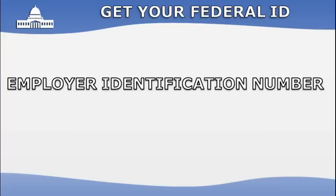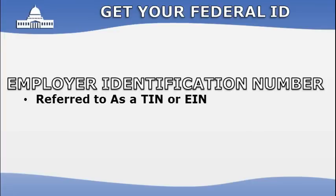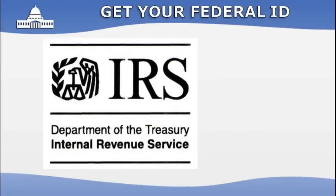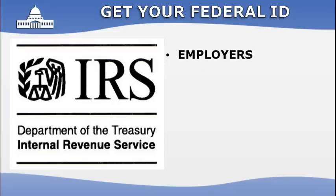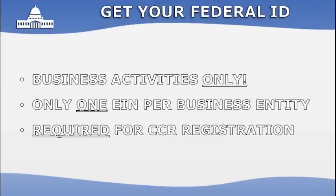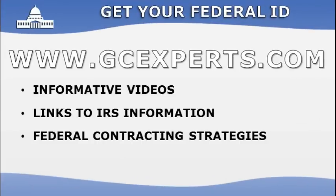To do business with the federal government, you must register in their system via an Employer Identification Number (EIN), also called a taxpayer identification number. This nine-digit number assigned by the IRS identifies tax accounts of employers and is used by sole proprietors, corporations, partnerships, non-profit associations, government agencies, and other entities. An EIN is also required to access the government's electronic solicitation postings. Visit GCExperts.com for an IRS video explaining the EIN system, along with links to apply online.